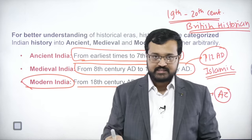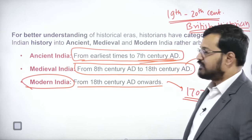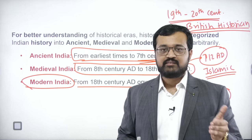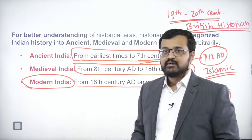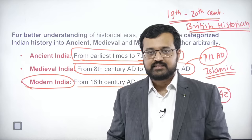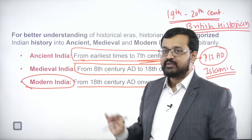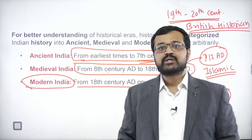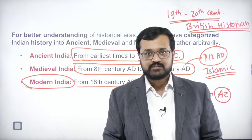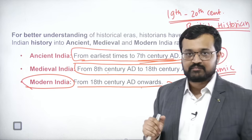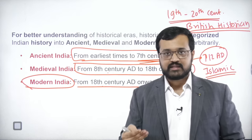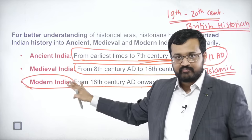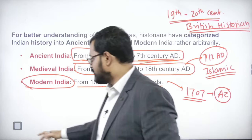We accept the dates given by colonial historians, but we no longer accept their philosophy. Indian nationalist historians say that up to the 7th century there was some sort of political unity in India — at least in North India — and that is why up to the 7th century we can consider it ancient India. From the 7th century onward there was large-scale fragmentation with many small dynasties, so that period we call medieval India. From the 18th century, after the Battle of Plassey and Battle of Buxar, the British took over India and introduced Western philosophies, giving Indians a taste of modernity — so that onwards is modern India.